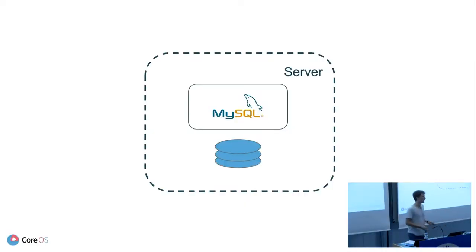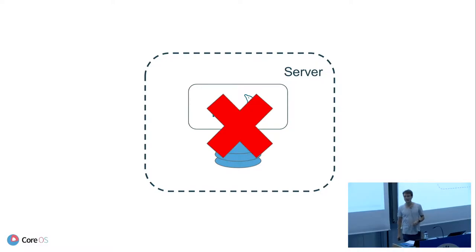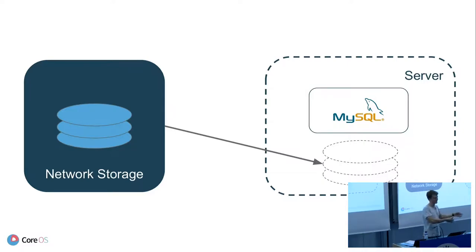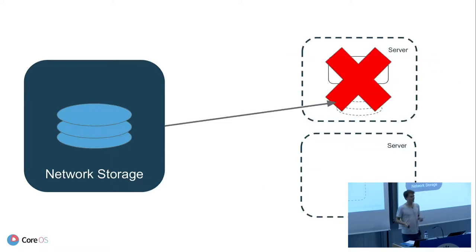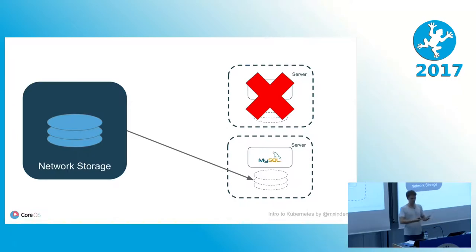Let's look at the problem. Stateless applications — we don't care if they die, we just start up a new one. But stateful applications, like a MySQL database, connect to the local disk and write data there. If the server fails, all your data is gone, and you'll have downtime. I suggest a different approach: having network storage, putting the idea of replication into your network storage, and having just mount points into your server with MySQL attaching to that. Now whenever the server dies, we can just move the disk to a new server and start the process there again.